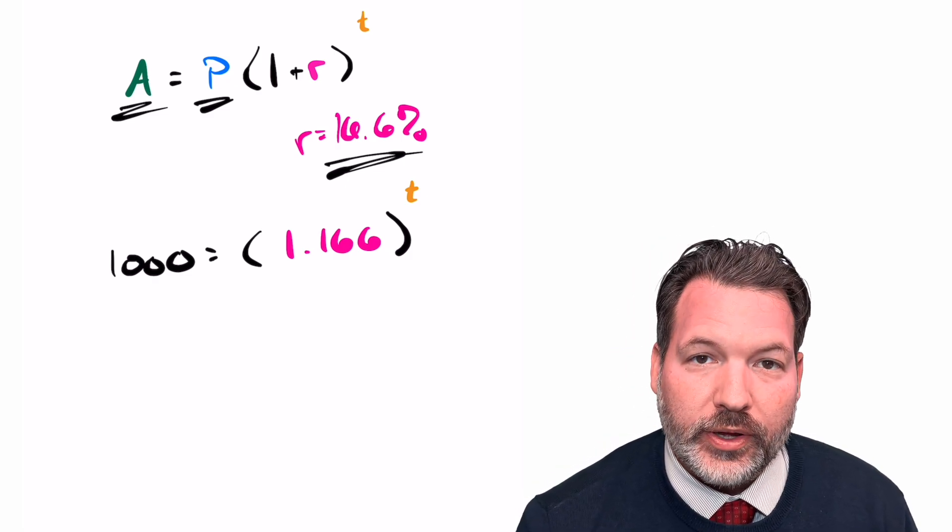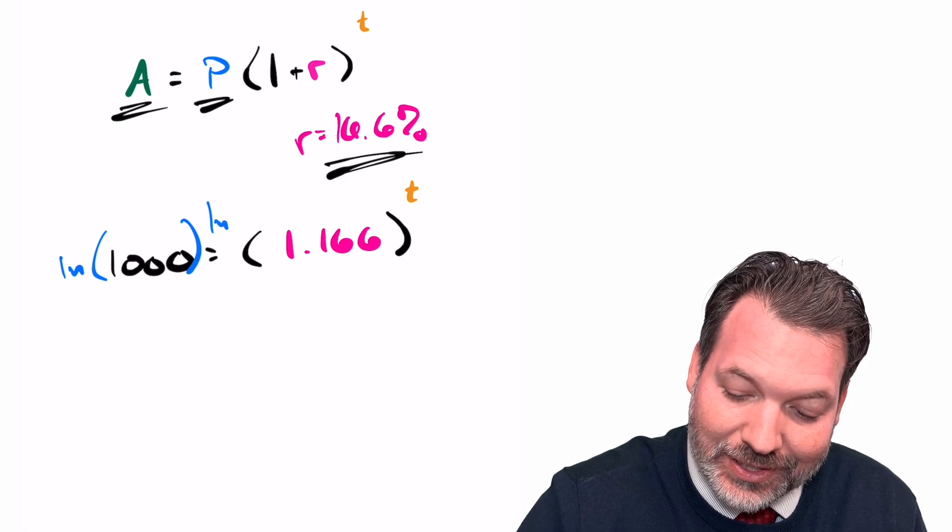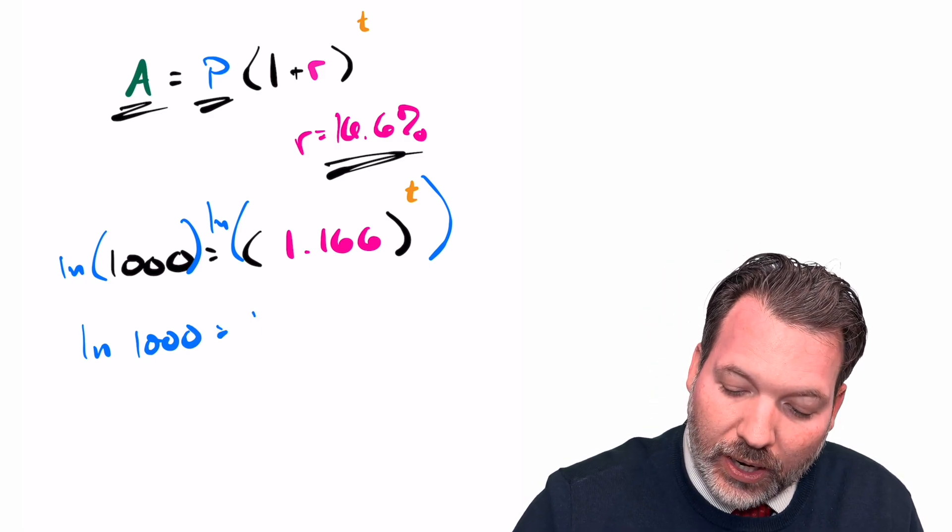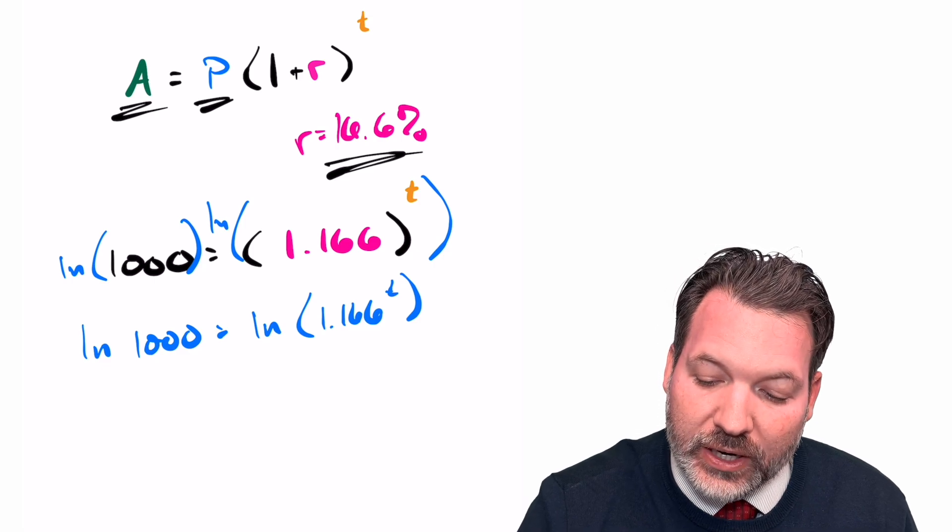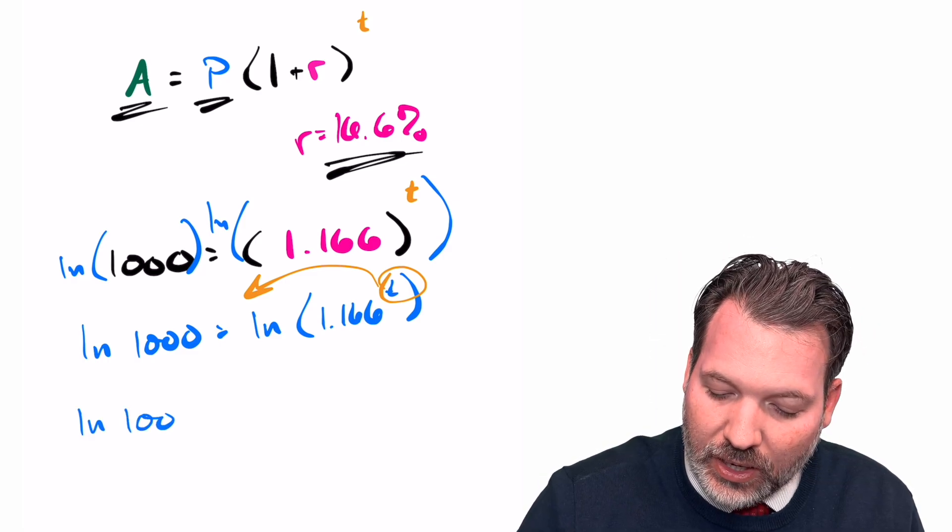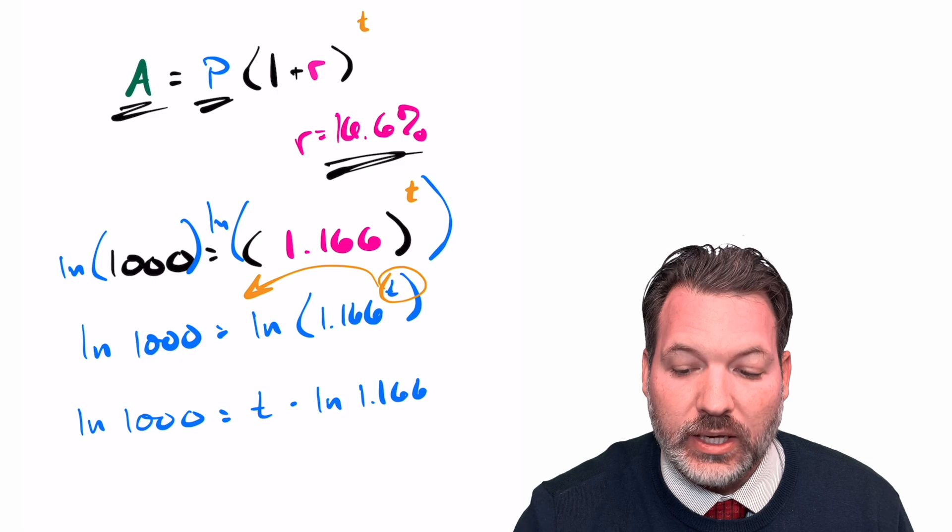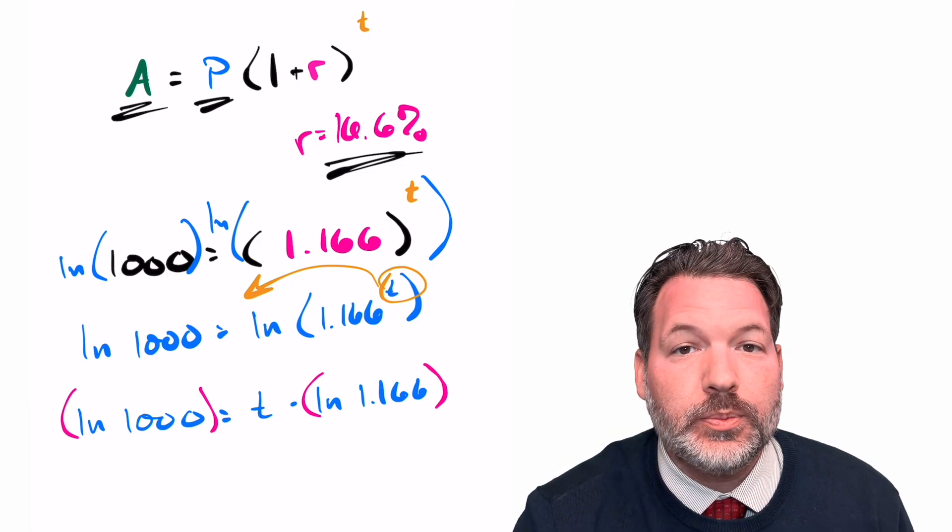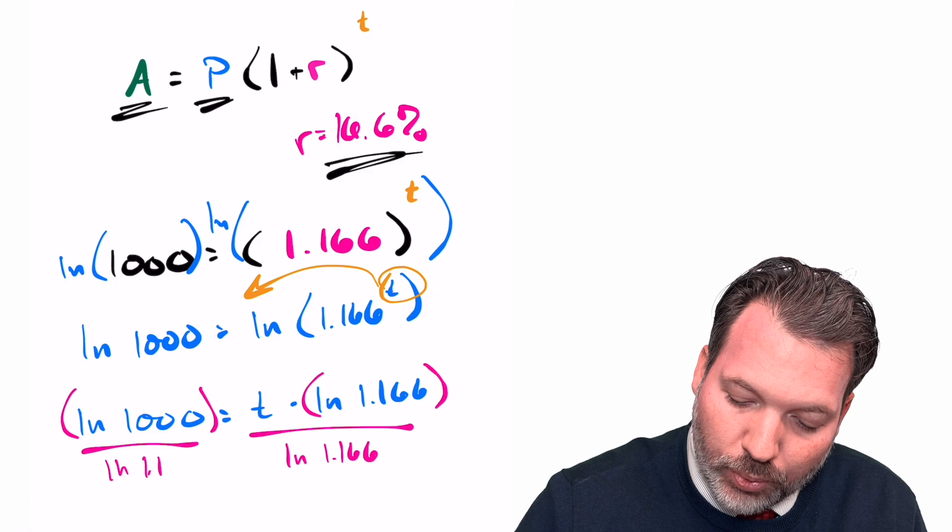We can take the logarithm of both sides of this equation. I'm just going to use the natural log. The particular type of log actually doesn't really matter. But what's going to happen is on the left, we're now looking at the natural log of a thousand. And on the right, we're looking at the natural log of 1.166 raised to the T power. But that's good because logarithms have this funny little property where any kind of exponents in the logarithm become a multiplier. And so this is actually the same thing as the natural log of a thousand equals T times the natural log of 1.166. Now the key here is to recognize both natural log a thousand and natural log 1.166 are just numbers. They're weird numbers, but they're just numbers. And so to isolate T right now, all we have to do is divide by the natural log of 1.166.